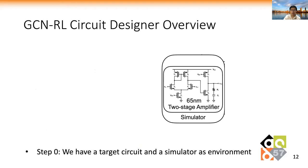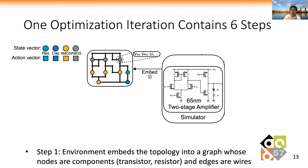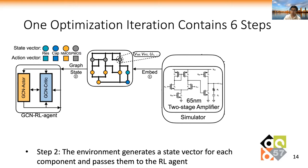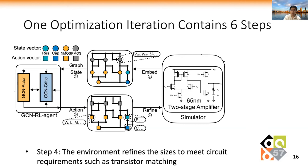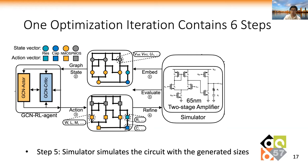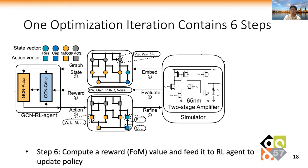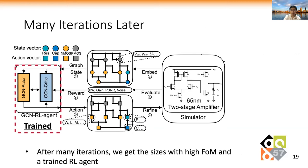In the GCNRL framework, we first have a target circuit and a simulator as the environment. One optimization iteration contains six steps. In step 1, the environment embeds the circuit topology into a graph, whose nodes are circuit components and edges are wires. Step 2, the environment generates a state vector for each component and sends the graph with state vectors to the reinforcement learning agent. Step 3, the RL agent processes the graph and state vectors and generates the sizes for each node. Step 4, the environment refines the sizes to meet circuit design requirements, such as transistor matching. Step 5, the simulator simulates the circuit with the generated sizes. In the last step, the reward value is calculated and fed to the RL agent to update the policy. After many iterations, we get the sizes with high performance and also a trained RL agent.